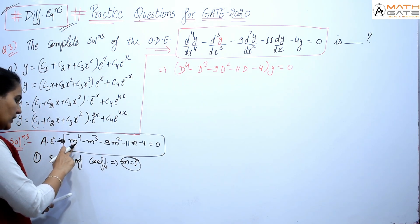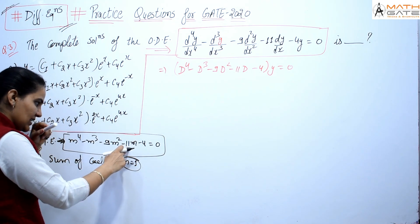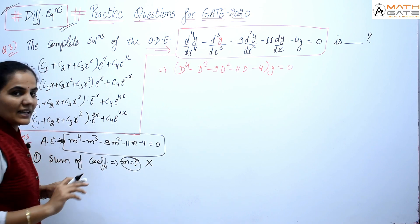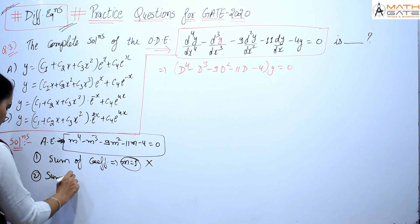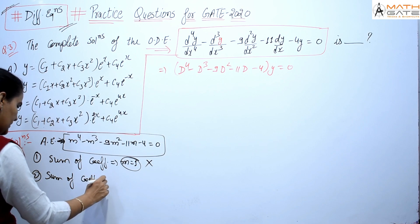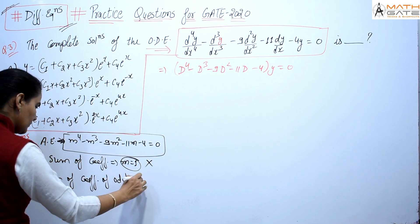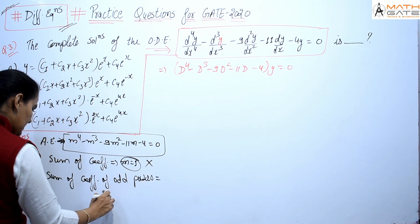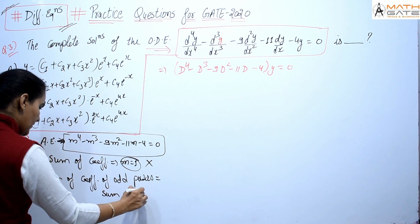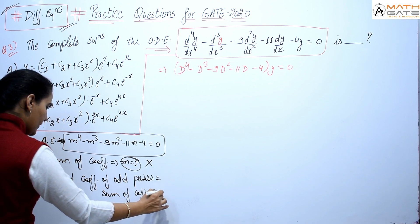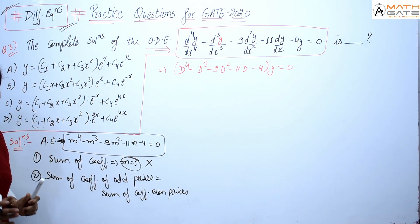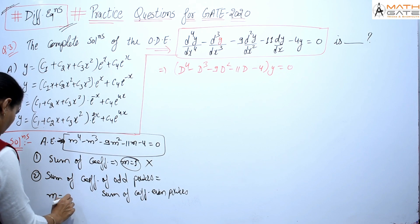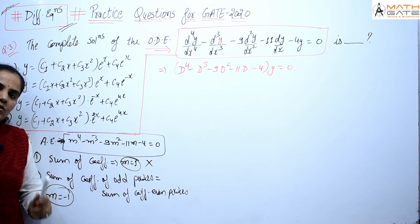If that doesn't work, the second point is: if the sum of coefficients of odd powers equals the sum of coefficients of even powers, then m equals minus 1 is a root, or m plus 1 is a factor.